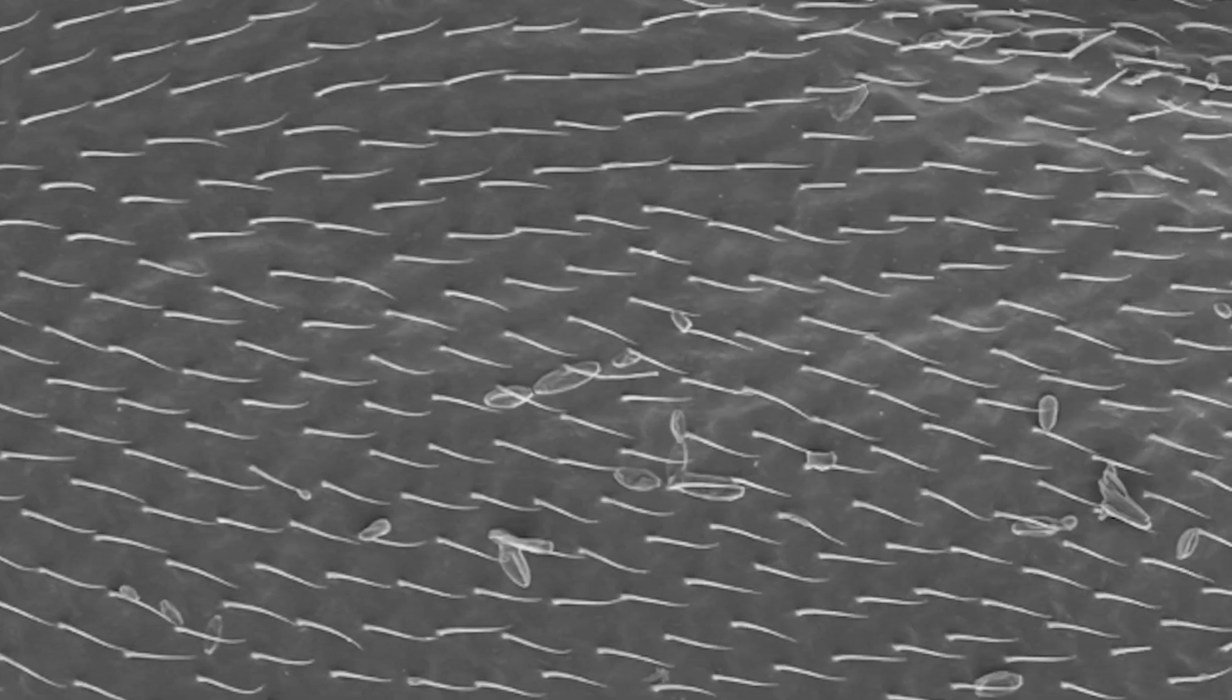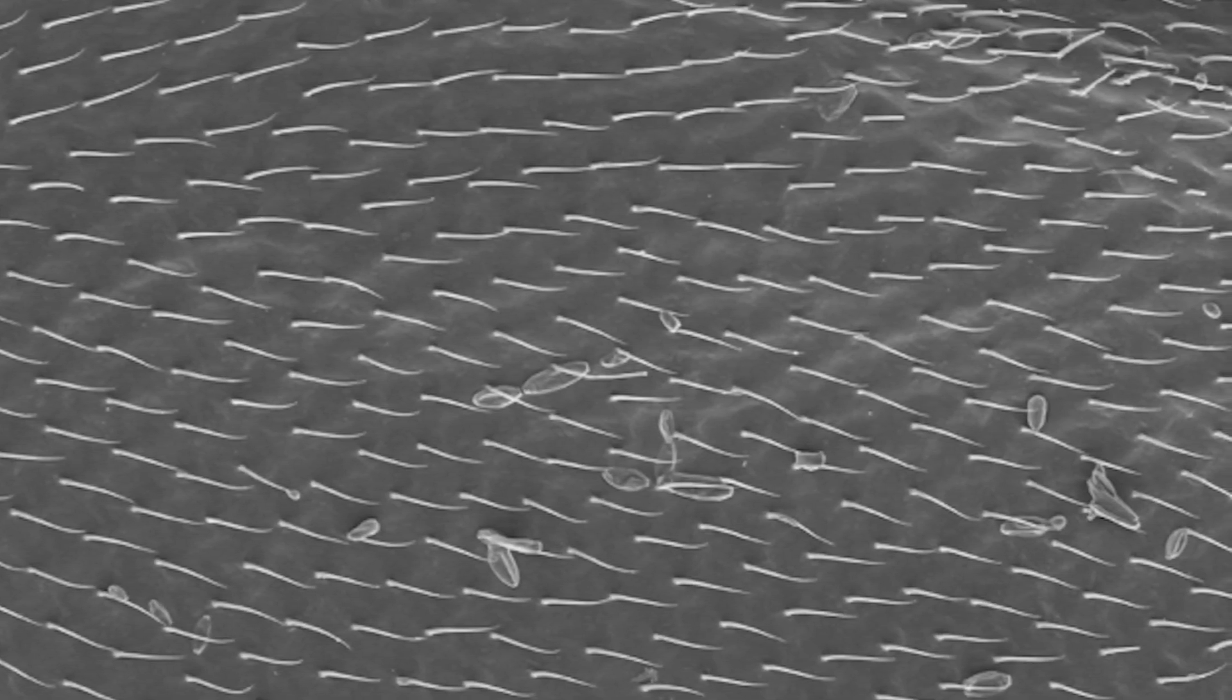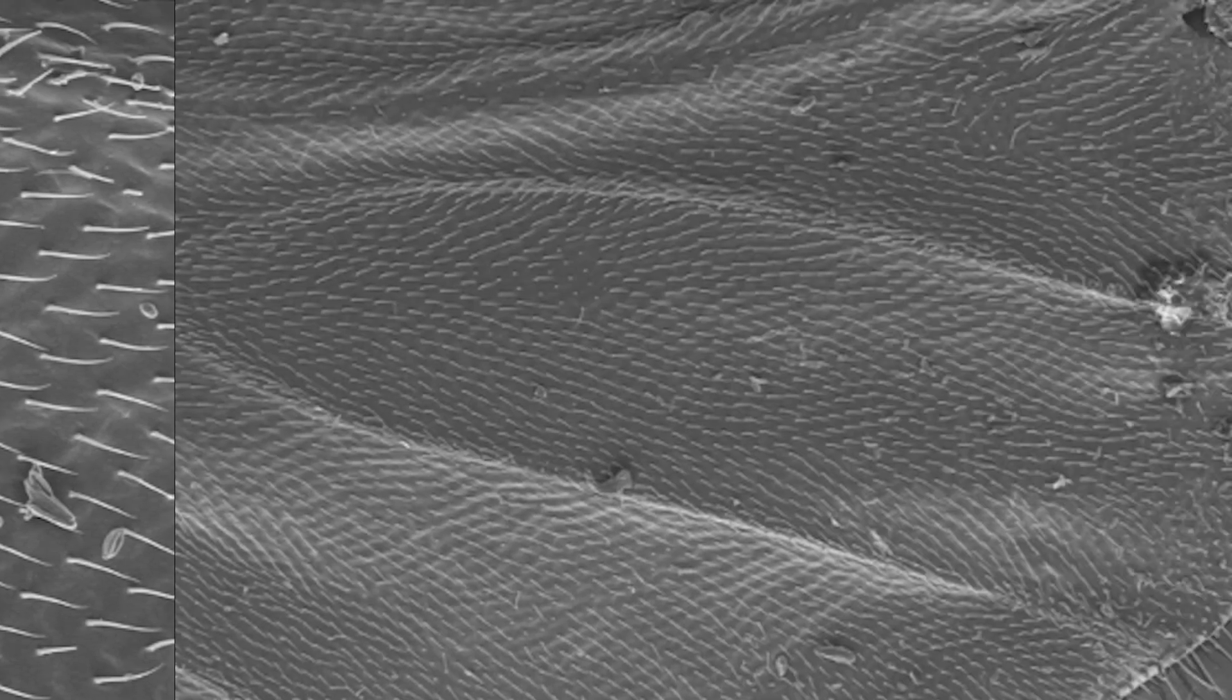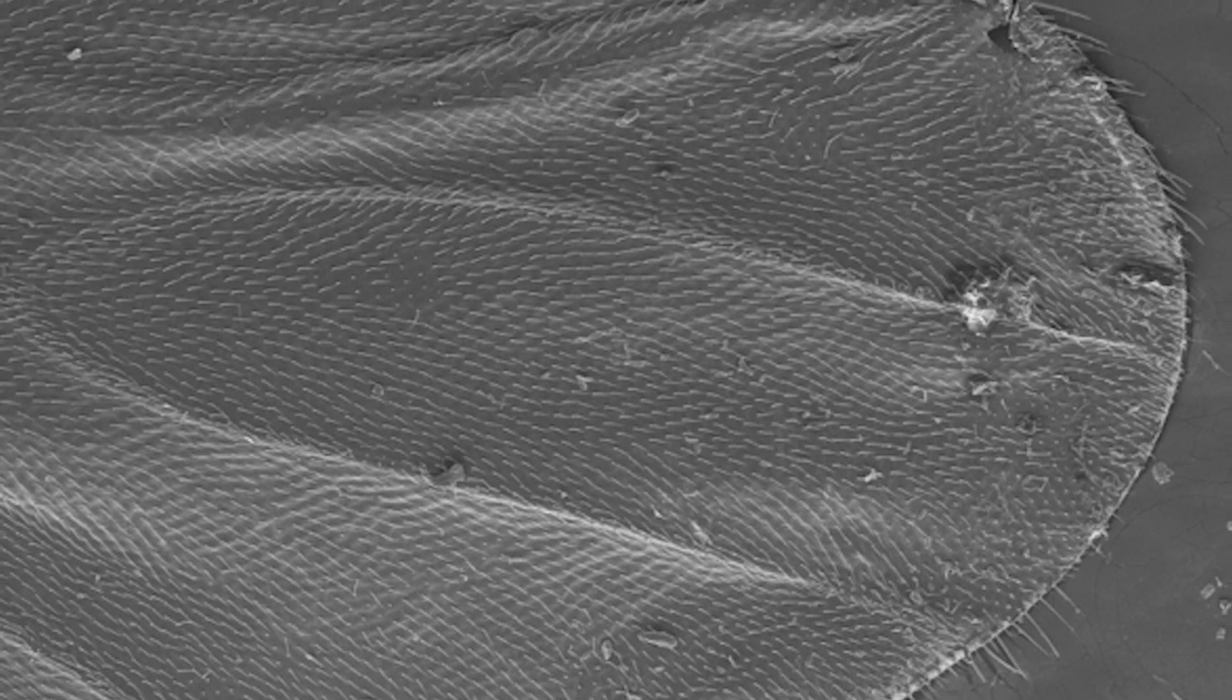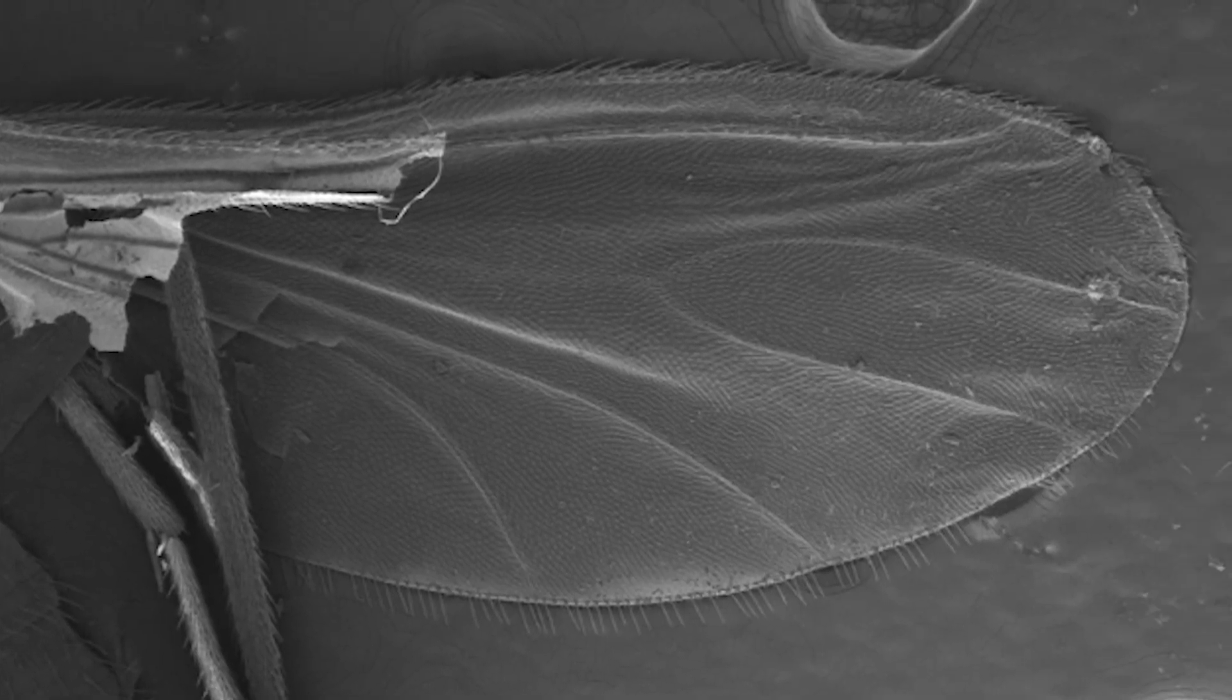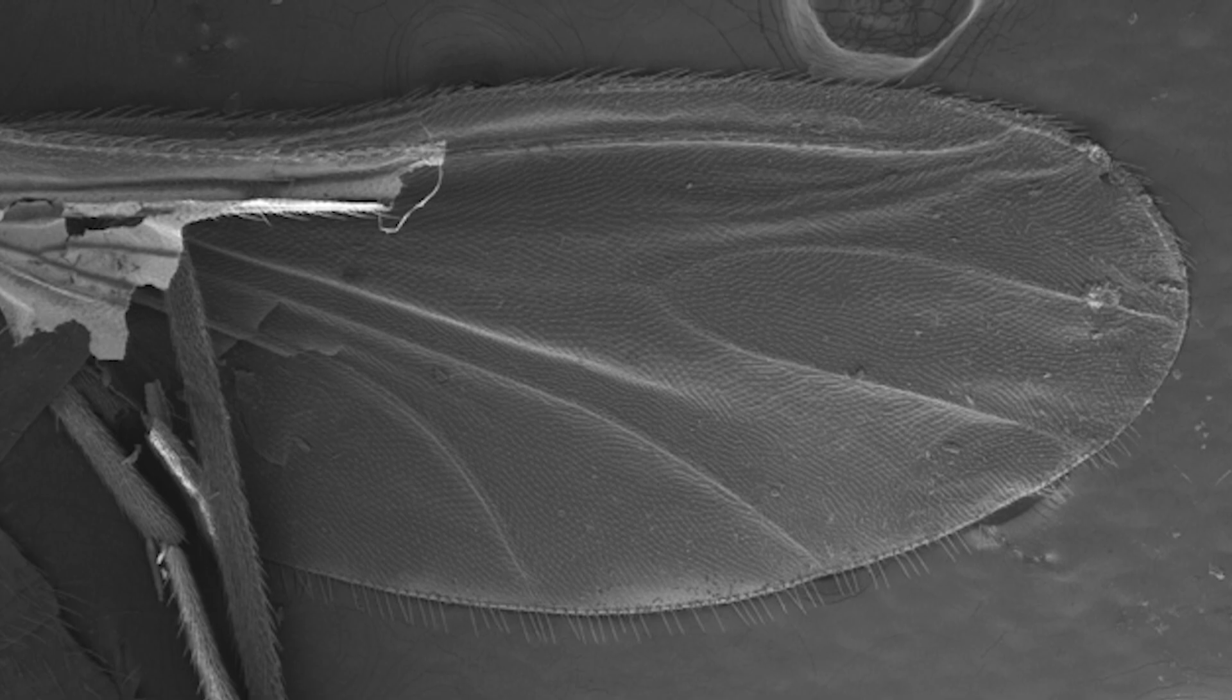Now check out this image taken at 1,000 times magnification. Can you guess what it is? Zoom out and you'll see these are the tiny hairs and intricate details of a mosquito wing brought to us by the scanning electron microscope.